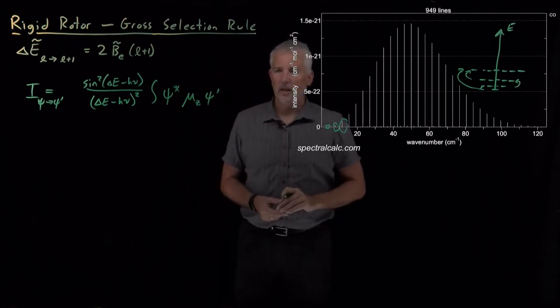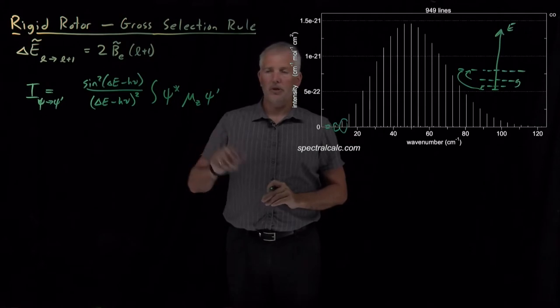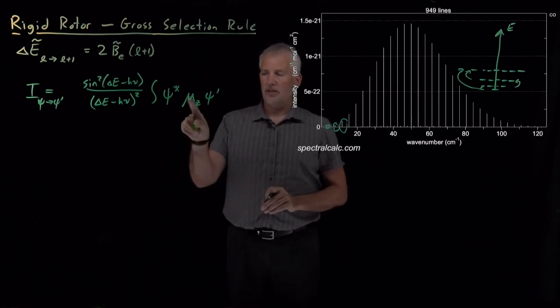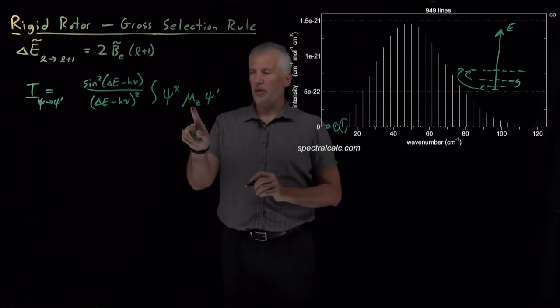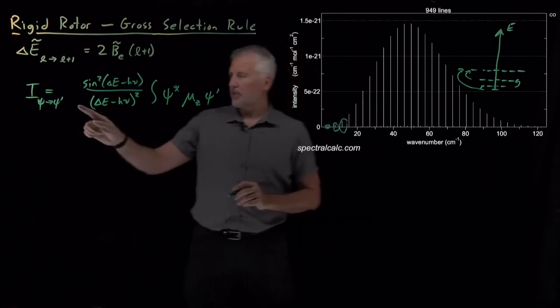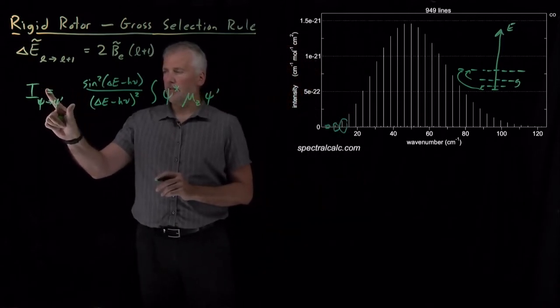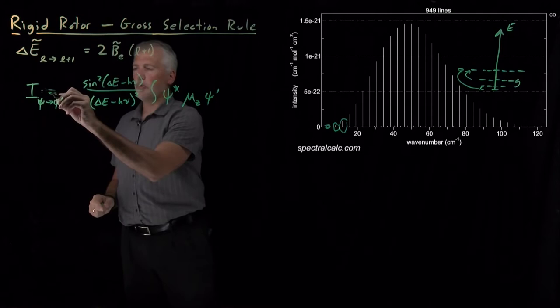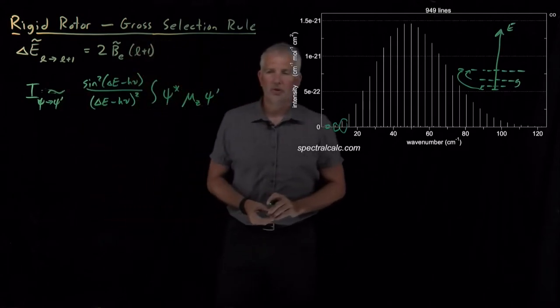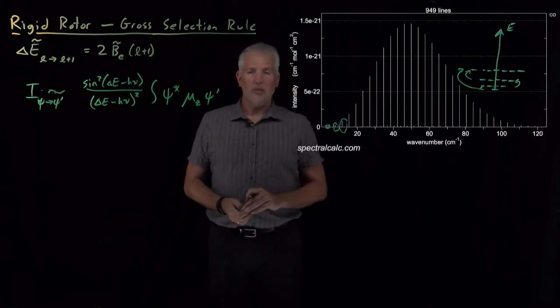We have this new quantity, mu sub Z. We'll talk about that one in just a second, and I guess I'll say that there's also some constants out front, so rather than saying this is equal to, I'll say this is proportional to this quantity.